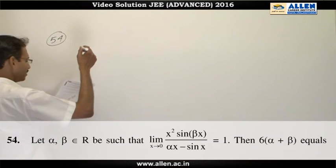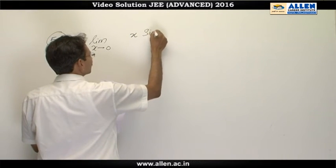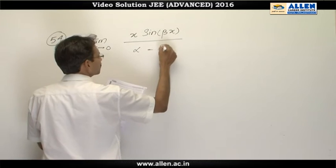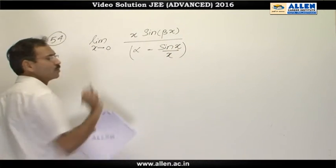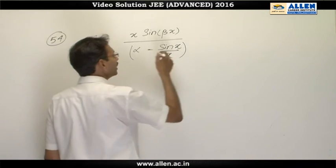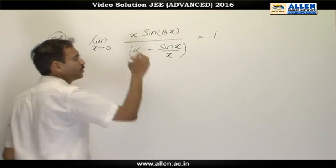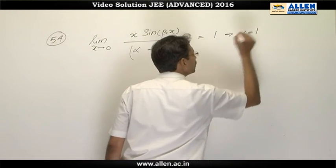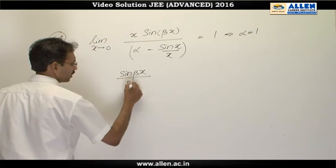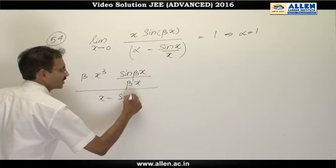Question number 54 is a routine limit problem: the limit as x approaches 0 of x squared times sin(βx) divided by αx minus sin x. Dividing numerator and denominator by x, the numerator approaches 0 and the denominator approaches alpha minus 1. For the limit to equal 1, the denominator must also approach 0, which means alpha equals 1. Considering alpha as 1, it becomes sin(βx) over βx, so the expression becomes βx cubed divided by x minus sin x.